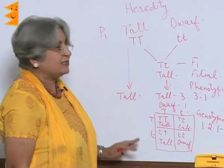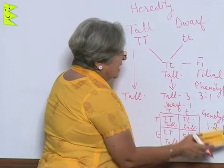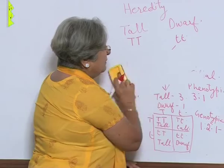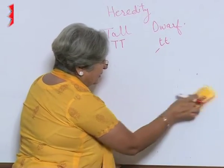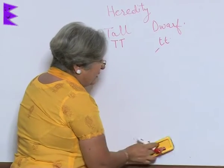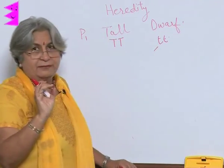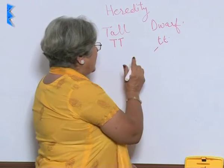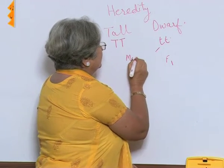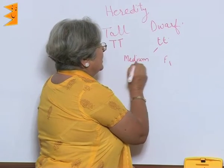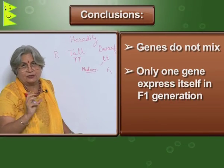Mendel's observations revealed a few things. First, although the plants were of different genetic makeup, it did not happen that the F1 generation had a medium or in-between trait — for example, it did not happen that the F1 generation was of medium height. This means the first conclusion is that genes do not mix.